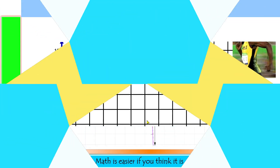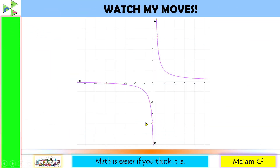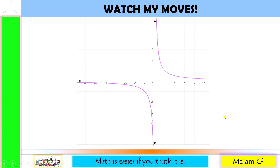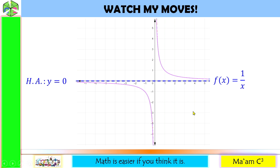As a bonus, allow me to discuss how to transform rational functions. For better understanding, please watch my video on kinds of functions and its transformation. We have learned that this graph is f(x) = 1/x. Our horizontal asymptote here is y = 0.